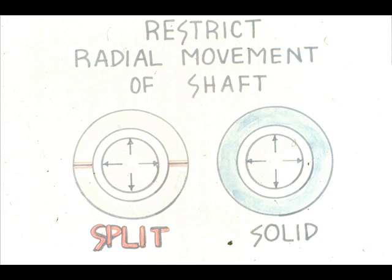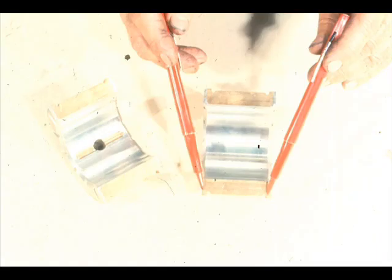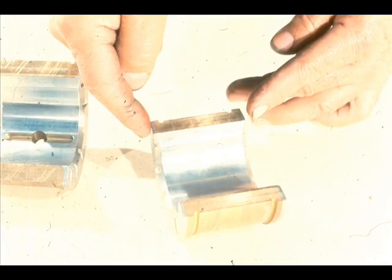The two basic types of sleeve bearings — the split sleeve and the solid sleeve — were designed to restrict the radial movement of the shaft during operation. A common variation you will encounter is sleeve bearings with a thrust shoulder, which are designed to restrict both the radial and axial movements of the shaft. Here is a split sleeve bearing with thrust shoulders. The thrust faces are coated with the same Babbitt lining used on the inside of the bearing. Sleeve bearings with thrust faces will normally have oil grooves which run all the way to the ends, since lubricant must be supplied to the thrust faces.